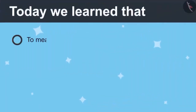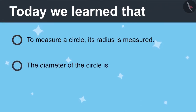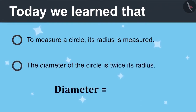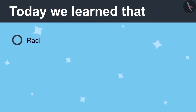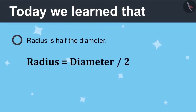Today we learned: to measure a circle, its radius is measured. The diameter of the circle is twice its radius — diameter equals radius multiplied by 2. Radius is half the diameter — radius equals diameter divided by 2.